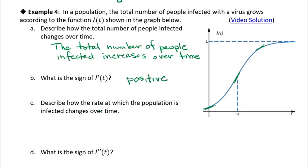Now it says to describe how the rate at which the population is infected changes over time. The slopes increase up to a certain point, and then the slopes start decreasing. Drawing tangent lines, you can see fairly shallow slopes getting steeper and steeper up until about point A, and then the increases start slowing down.